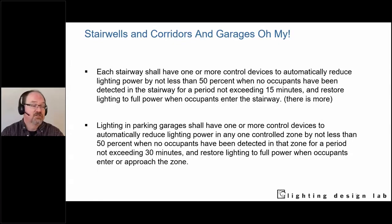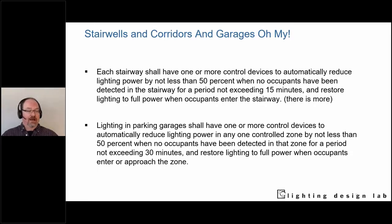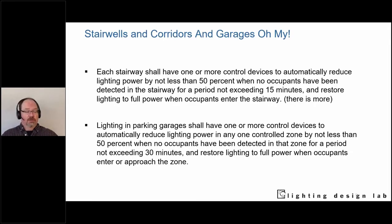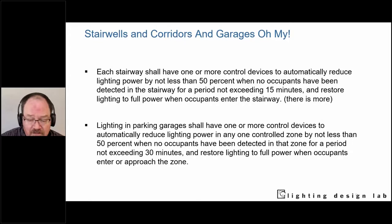Parking garages are one of the best applications for luminaire-level lighting controls. Adding wireless sensors is problematic because of all the steel and concrete mass cutting down wireless signal transmission. Running wired control cables through embedded or surface conduit is also impractical. The better approach is to put everything into each light fixture — each becomes its own individual control zone. All you need is hot, neutral, and ground. These fixtures are dimmable, you set up the programming, and life is good.